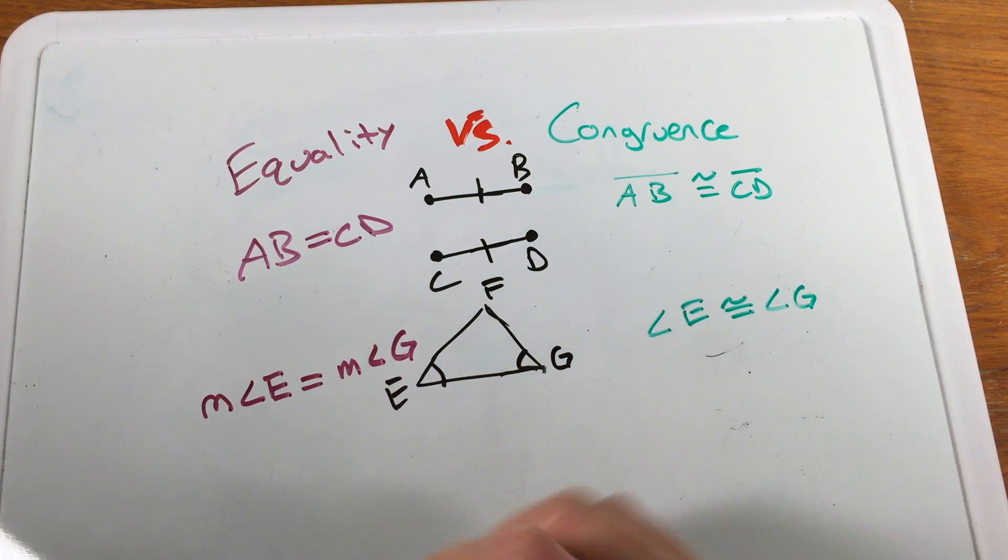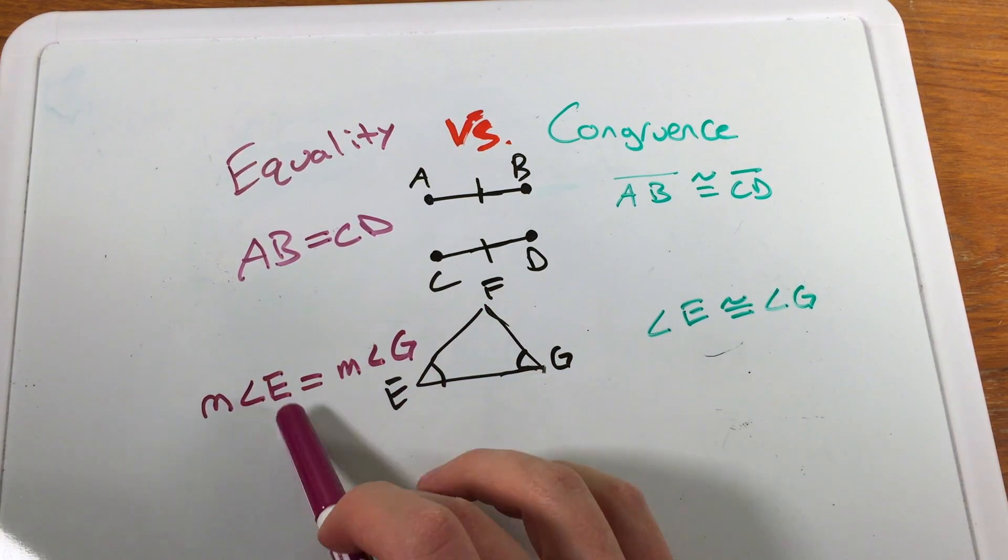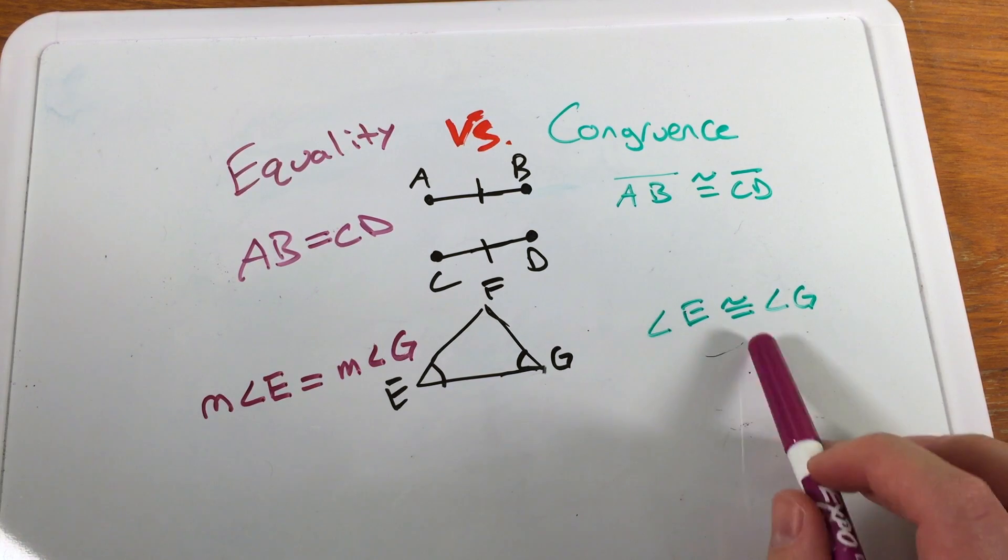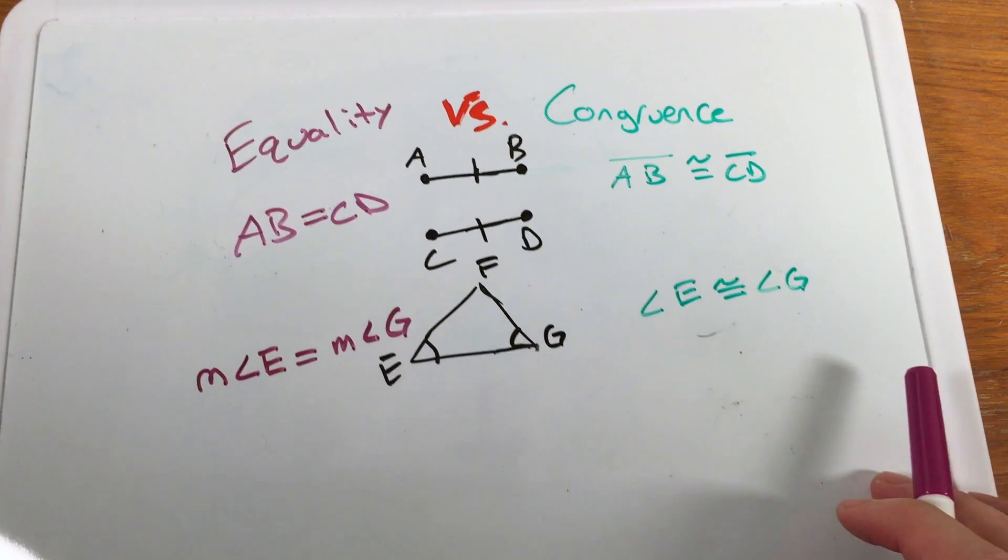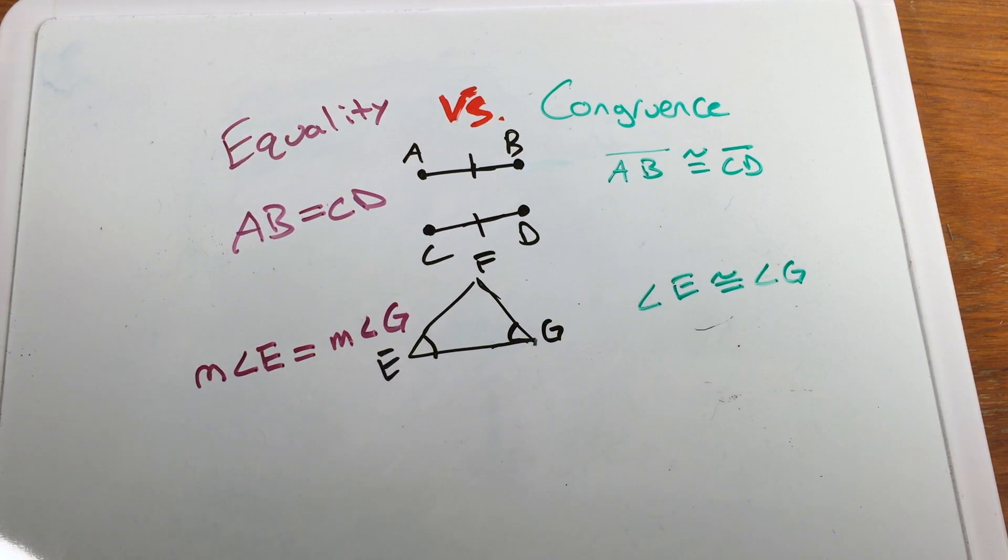These measurements are equal. These angles themselves are congruent. The measurements are equal because we can add, subtract, multiply actual measurement values, whether they're 30 degrees, 40 degrees, 50 degrees, etc. These are referring to the angle itself.